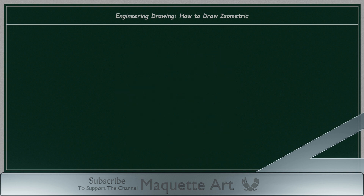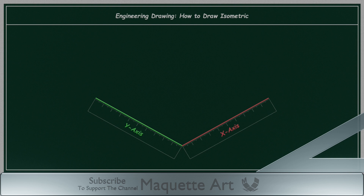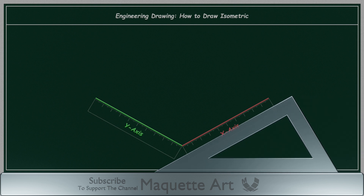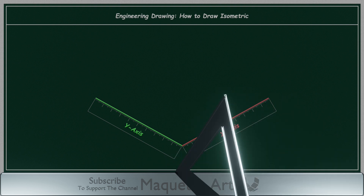Now let's draw this grid again, but this time the x-axis is at a 30-degree angle from the horizontal, and the y-axis is also at a 30-degree angle from the left side. For engineering students, you will use the t-square and the 30-degree angle triangle to draw the x and y-axis.